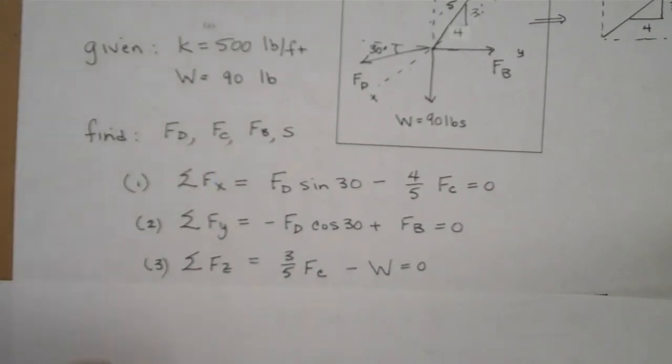In the Y direction we have FD cosine of 30 pulling down in the negative Y direction, FB in the positive Y direction. And then in the Z direction, we have 3 fifths of FC pulling up and the weight pulling down. So we now have our 3 equations, 3 unknowns.